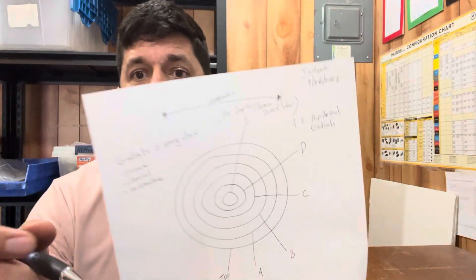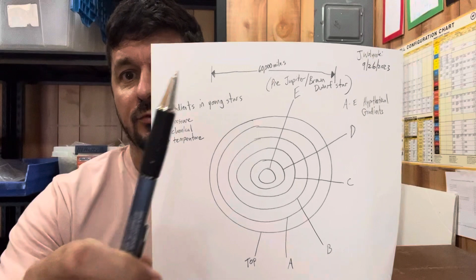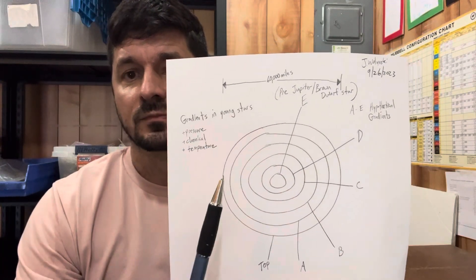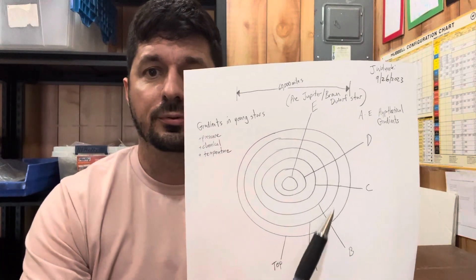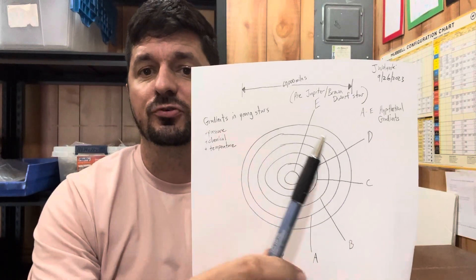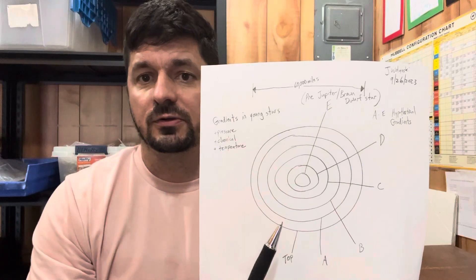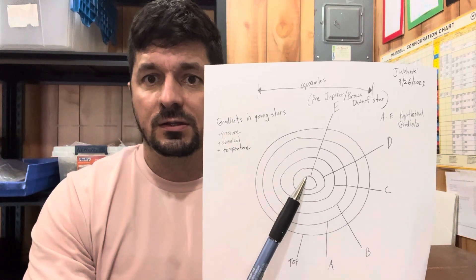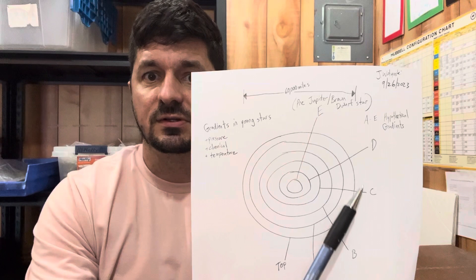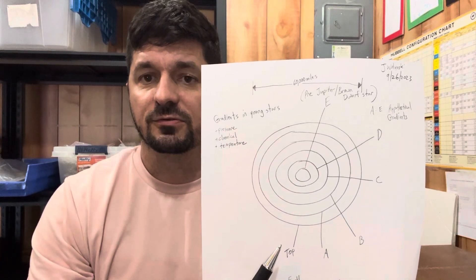You had to have the gradients - differences in pressure, differences in chemistry, differences in temperature - and those differences had to meet at boundaries. Hypothetically, for a young star, say there's 60,000 miles of diameter here - this would be a pre-Jupiter or post-Jupiter around a Jupiter/Saturn-sized object. Each line is a gradient: E, D, C, B, A.